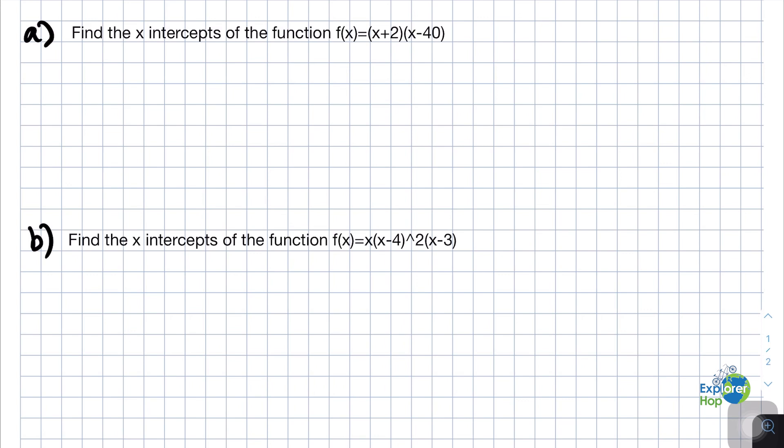Put the function (x+2)(x-40) equal to 0. Now we can use the zero product property which states that whenever we have two terms, for example x+2 being multiplied by x-40, we can put them equal to 0 and solve them separately.